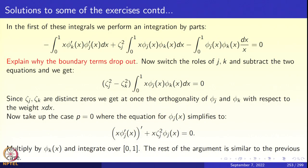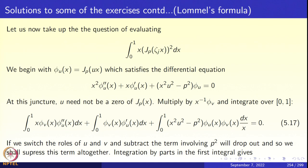Now, let us go a little further. We want to calculate the integral from 0 to 1 of J_p(ζx) squared x dx. Note that x dx is the measure and this is the L2 norm of the function φ_j(x) with respect to this measure.